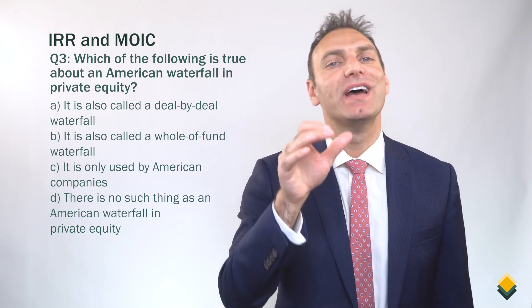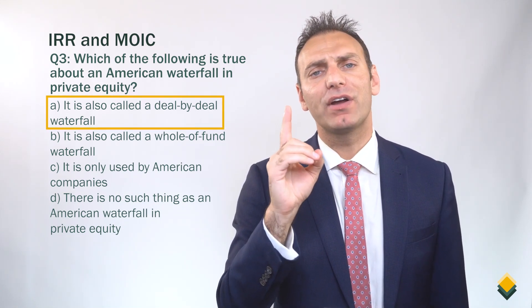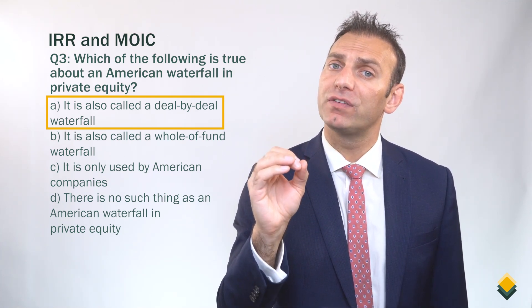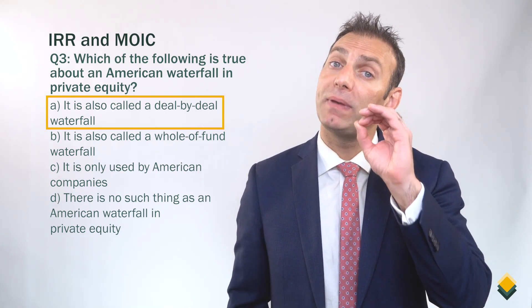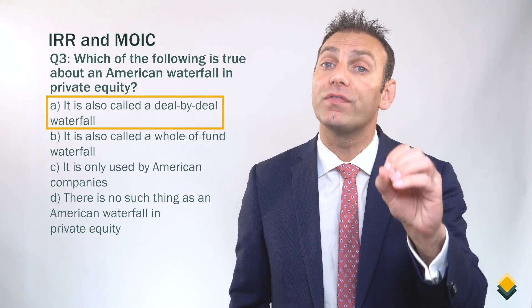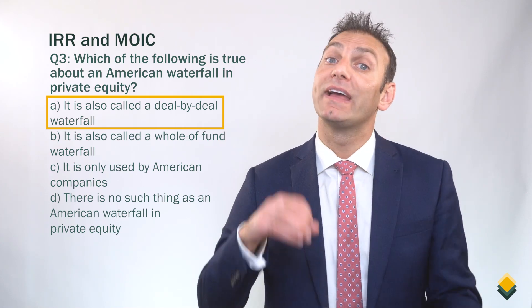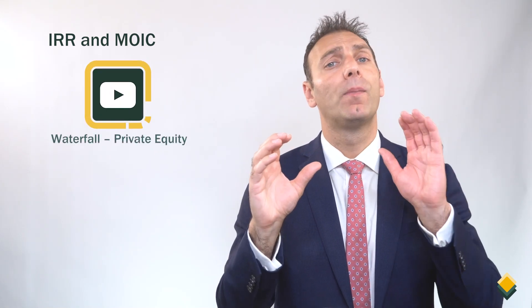The answer is A — it's also called a deal-by-deal waterfall. An American waterfall allows the general partner to collect performance fees on a deal-by-deal basis. This is in contrast to a European waterfall, which ensures limited partners will receive all of their capital back plus a hurdle rate before the general partner can collect a performance fee. For more information on waterfalls, please check out our video titled Waterfall Private Equity.